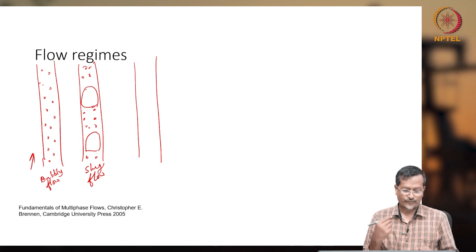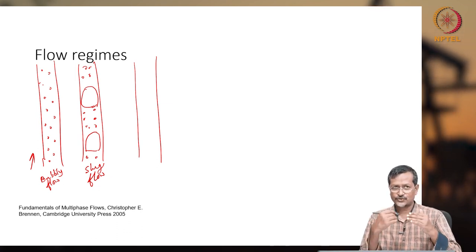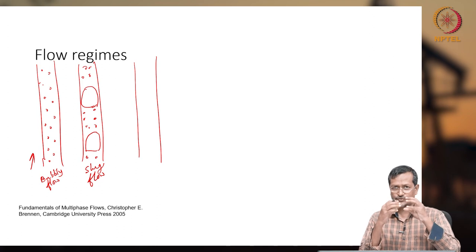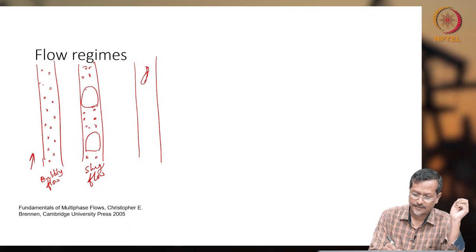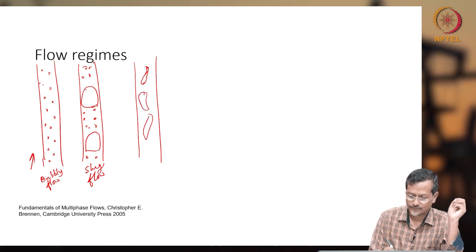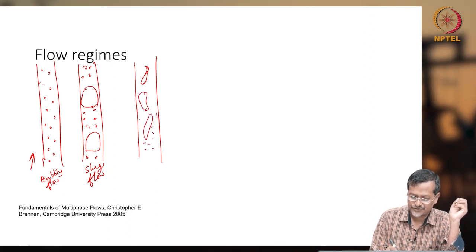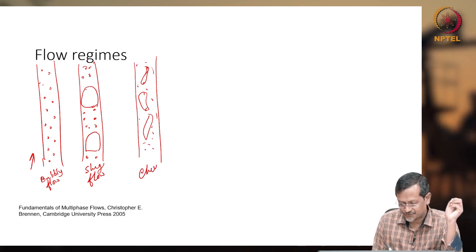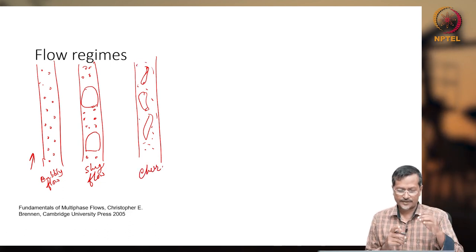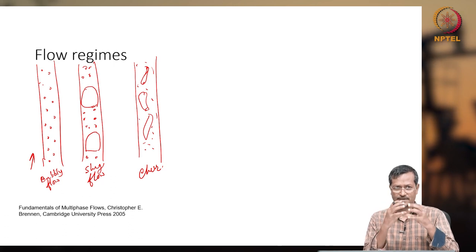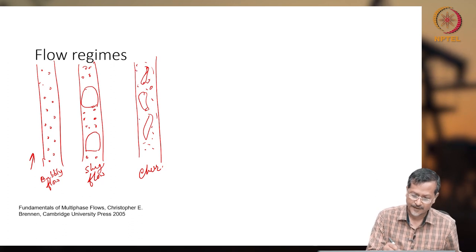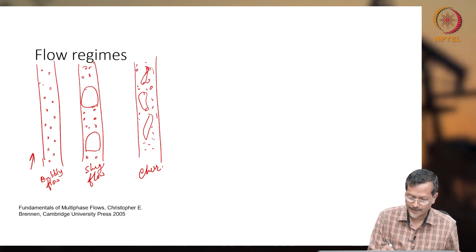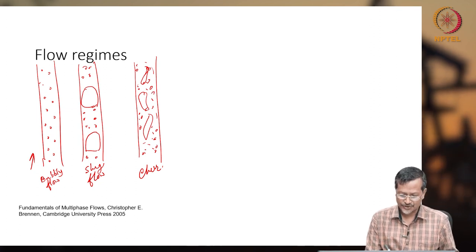In slug flow, bigger gas bubbles move with liquid. If you increase gas flow further, the slugs and bubbles collide and break, creating very unstable bubbles — this is called churn flow. In churn flow, the uniform slugs are broken and particles move in more random motion. Liquid particles move up and down with increasing randomness in the system.